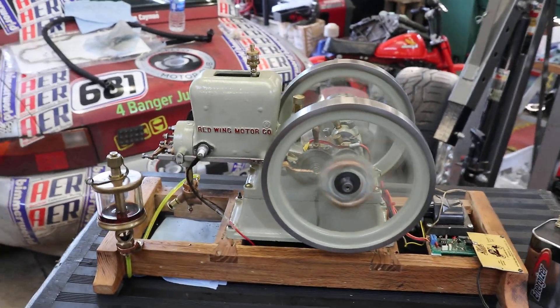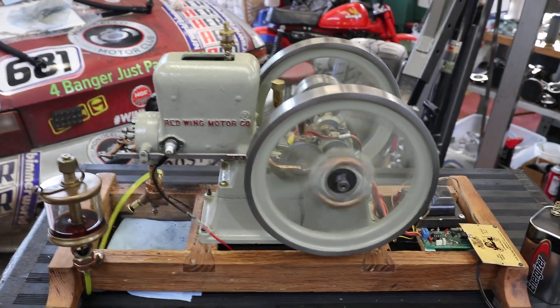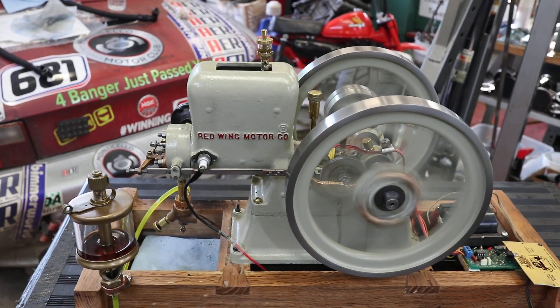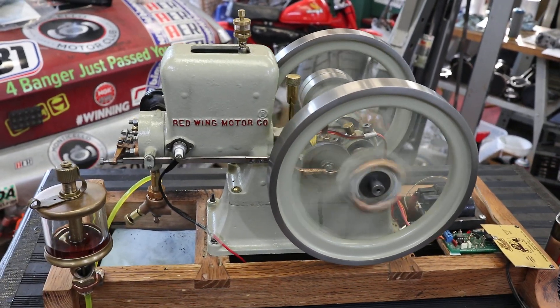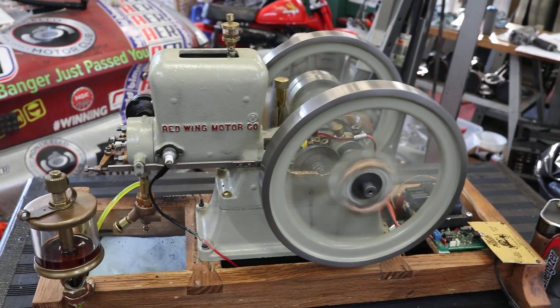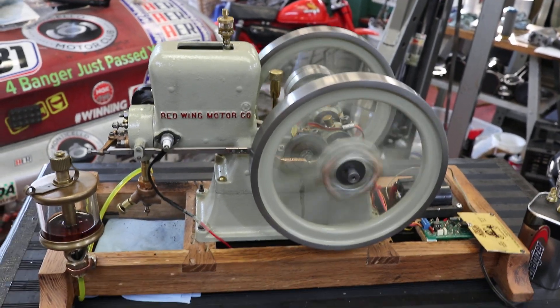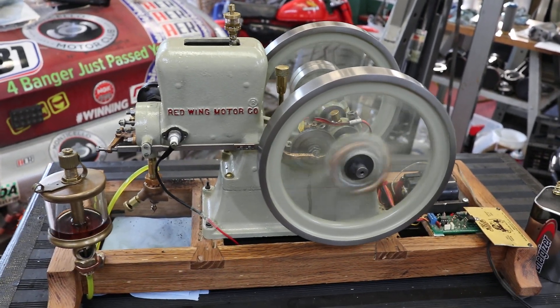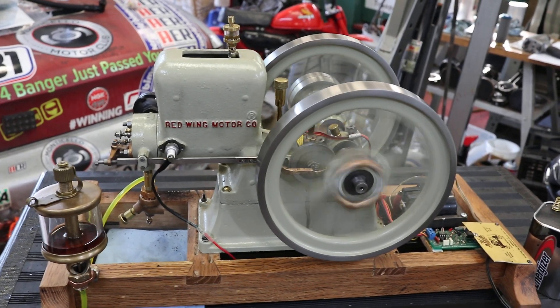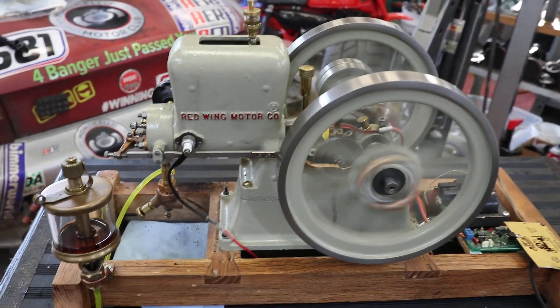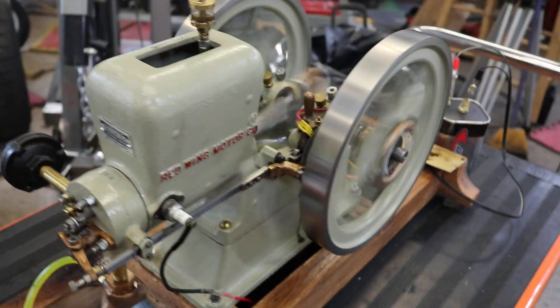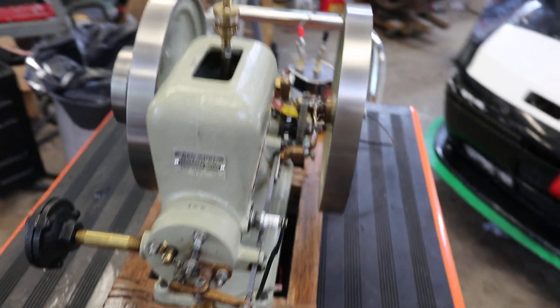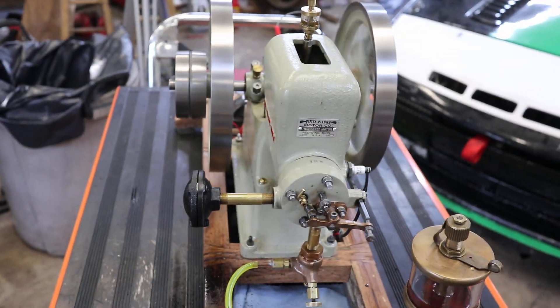This is a working scale model of a hit-or-miss engine. This is a Red Wing, the original was a five horsepower Red Wing engine and this is a stationary engine. This is a one-quarter scale model of it and it runs and it's super cool, so I thought I would point out some of the features and some of the things.